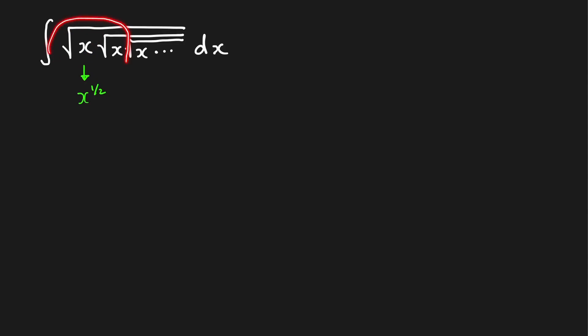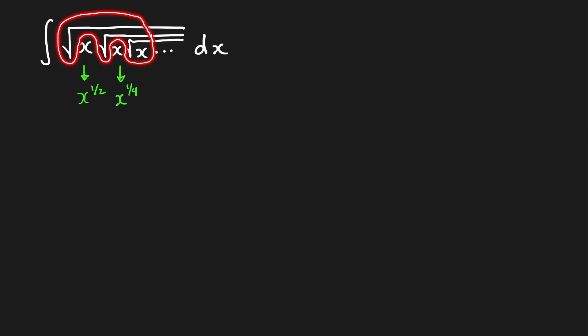This one here will be the square root of the square root of x, which is the fourth root of x, so in rational exponents this becomes x raised to one fourth. And this one here is the square root of the square root of the square root of x, which is the eighth root of x, equal to x raised to one over eight, and so on.